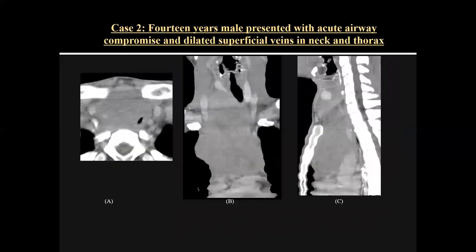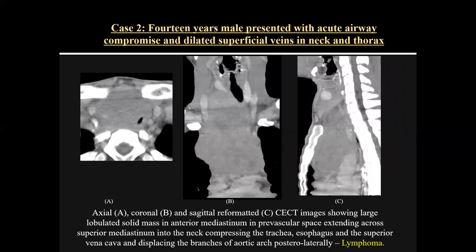Case two was a 14-year-old male presenting with acute airway compromise and dilated superficial veins in the neck and thorax. On axial, coronal, and sagittal images, there was a large lobulated solid mass in the anterior mediastinum in the prevascular space extending across the superior mediastinum into the neck, compressing the trachea, esophagus, and superior vena cava, and displacing the branches of the aortic arch posterolaterally. This was a case of lymphoma causing superior vena cava syndrome.